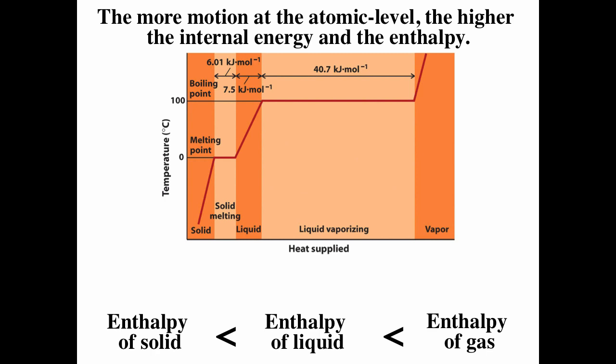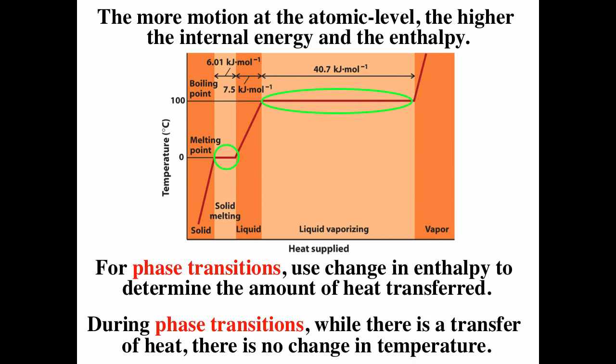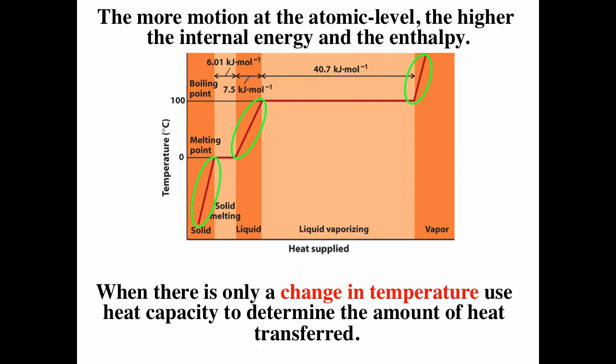The more motion at the atomic level, the higher the internal energy and enthalpy. The enthalpy of a gas is always higher than the corresponding liquid, which is always higher than the corresponding solid. During phase transitions, we use the change in enthalpy, and notice that during phase transitions there is no change in temperature. When there is no phase transition and only a change in temperature, we use heat capacity.